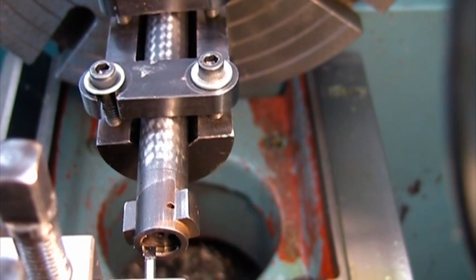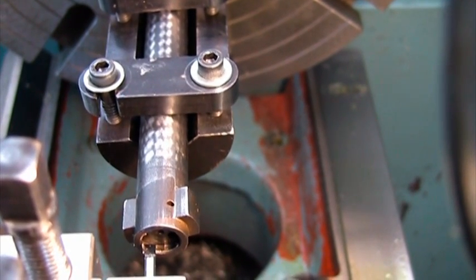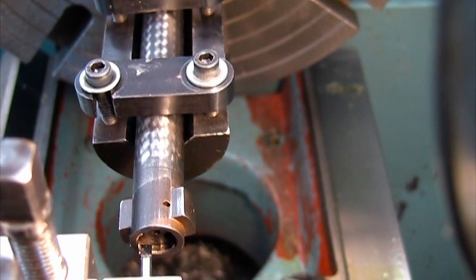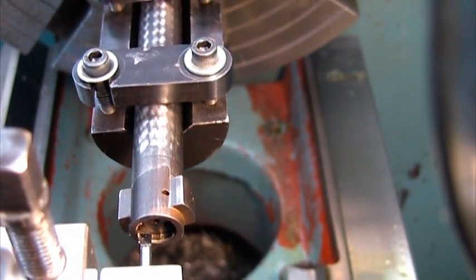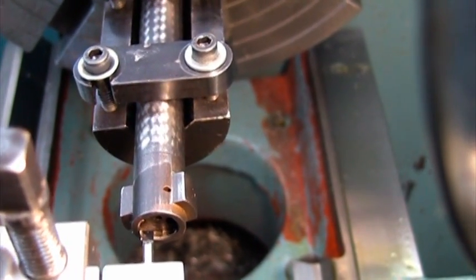I'm going to take the original opening and bore it out to a diameter of 0.625. It's going to be a little hard to see while I'm cutting, so I'll show you before and after.